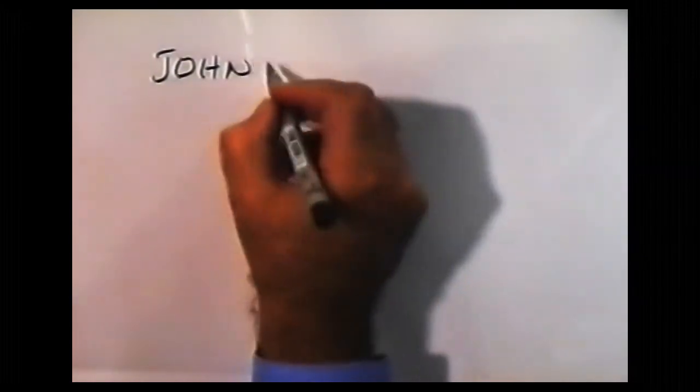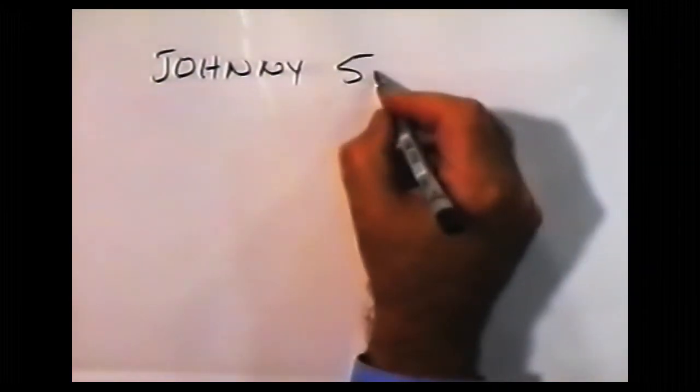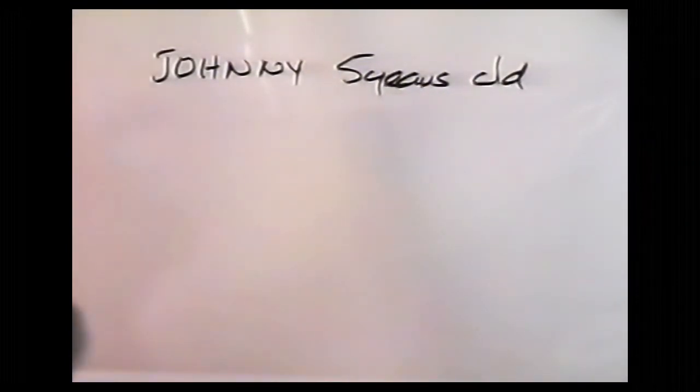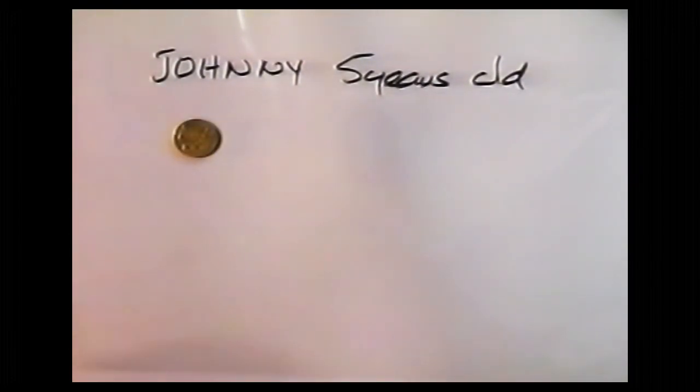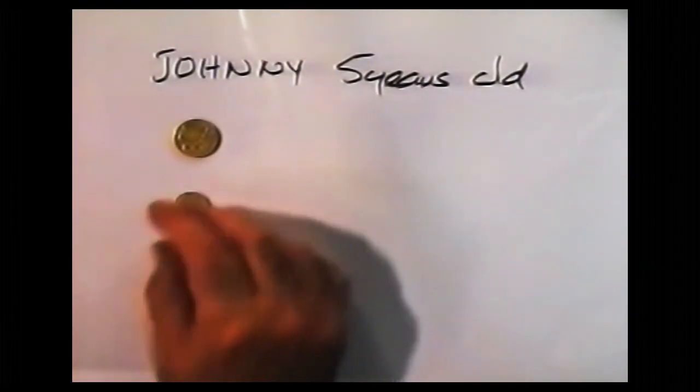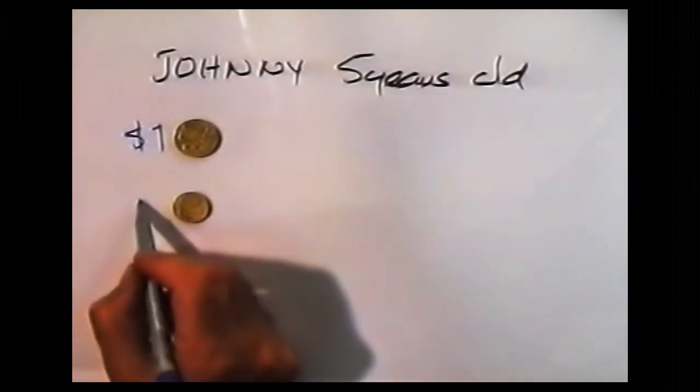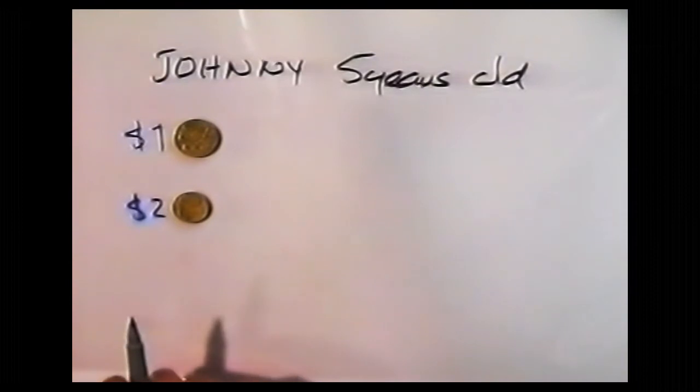The story is of a little boy called Johnny, and he's five years old, and one day his friends offer him a choice of two coins. A one dollar coin and a two dollar coin. And they say to him, Johnny, which of these do you want? You can take, you can keep, whichever one you choose.